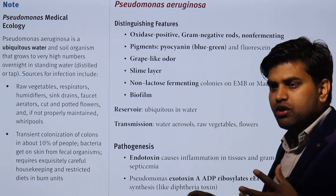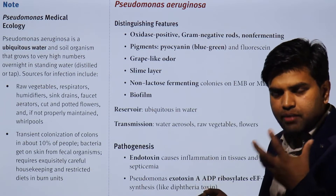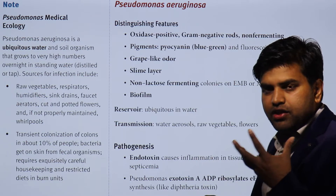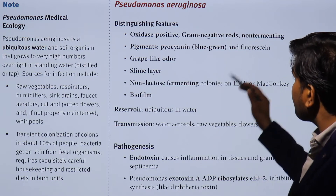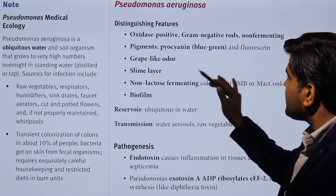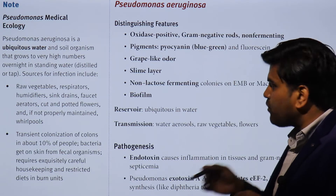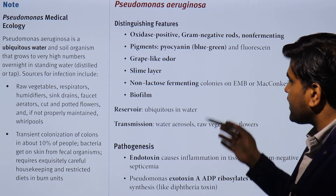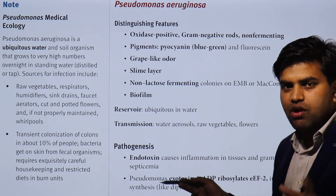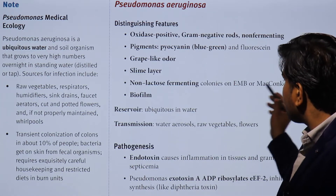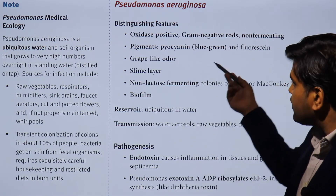Pseudomonas has a grape-like musty odor. If you grow the organism on MacConkey agar, you will find green-colored colonies with that grape-like odor. This is a gram-negative, non-fermenting, oxidase-positive organism that produces pigment and has a slime layer as an outer layer that helps in attachment. It produces non-lactose-fermenting pale colonies on EMB and MacConkey agar. If you find a pale colony on MacConkey agar, the differential diagnosis includes Pseudomonas, Salmonella, and Shigella — and among these, Pseudomonas will be oxidase positive.